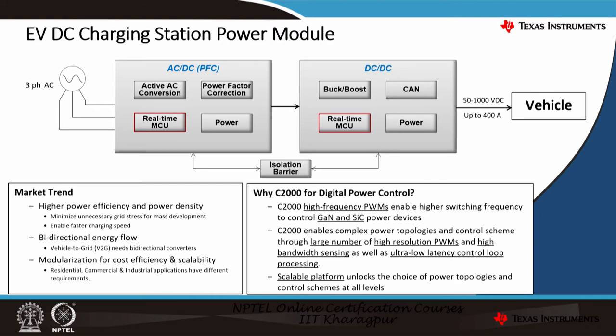Additionally, you need to have a bi-directional energy flow for vehicle-to-grid charging. Lastly, we have modularization for cost efficiency and scalability — that is for residential, commercial, and industrial applications, each will have its own different requirements. That's why we need modularization.